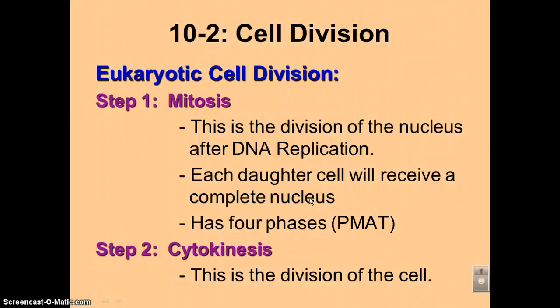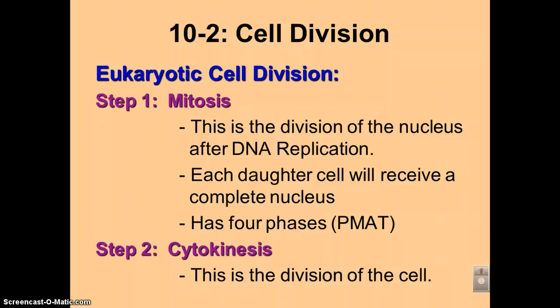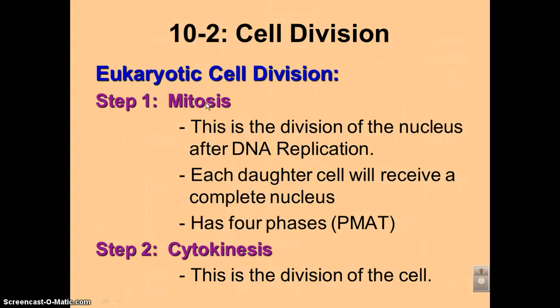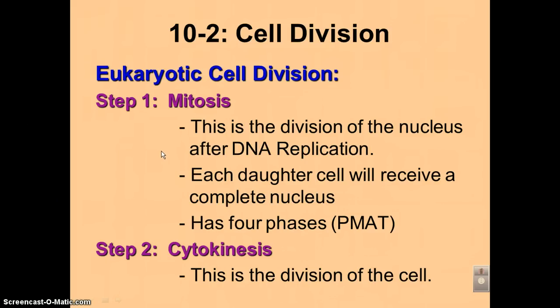In podcast number three, we are going to focus on the structure of eukaryotic chromosomes. So why are we going to talk about eukaryotic chromosomes? Well, first of all, they're going to play a central role in eukaryotic cell division. And eukaryotic cell division has two steps. Step number one is going to be mitosis. Mitosis is the process of making sure that each of the daughter cells will get a complete and functional nucleus.